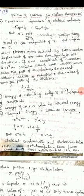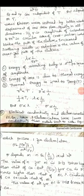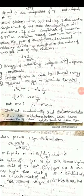When electron waves are scattered by lattice vibrations, displacement of ions takes place equally in all directions. If r is the amplitude of vibration, then pi r squared is the circular area of cross section that blocks the path of the electron. Increased scattering results in a reduction in the mean free path, so the mean free path is inversely proportional to pi r squared.